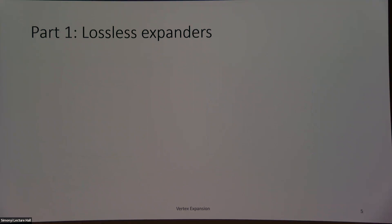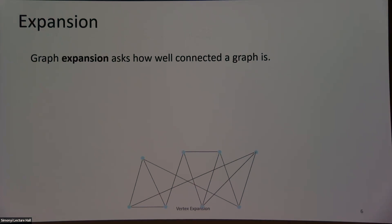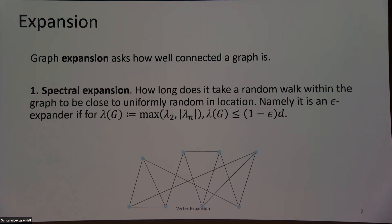For the first part, we'll talk about lossless expanders. When I think about a graph, I want to think about its connectivity, which we call its expansion. There are many different notions of how to quantify how connected a graph is. First, I could think about spectral expansion: if I start at an arbitrary vertex, how long does it take for a random walk to reach the uniform distribution? This is governed by the spectrum of the adjacency matrix — specifically, by the size of the second largest eigenvalue.